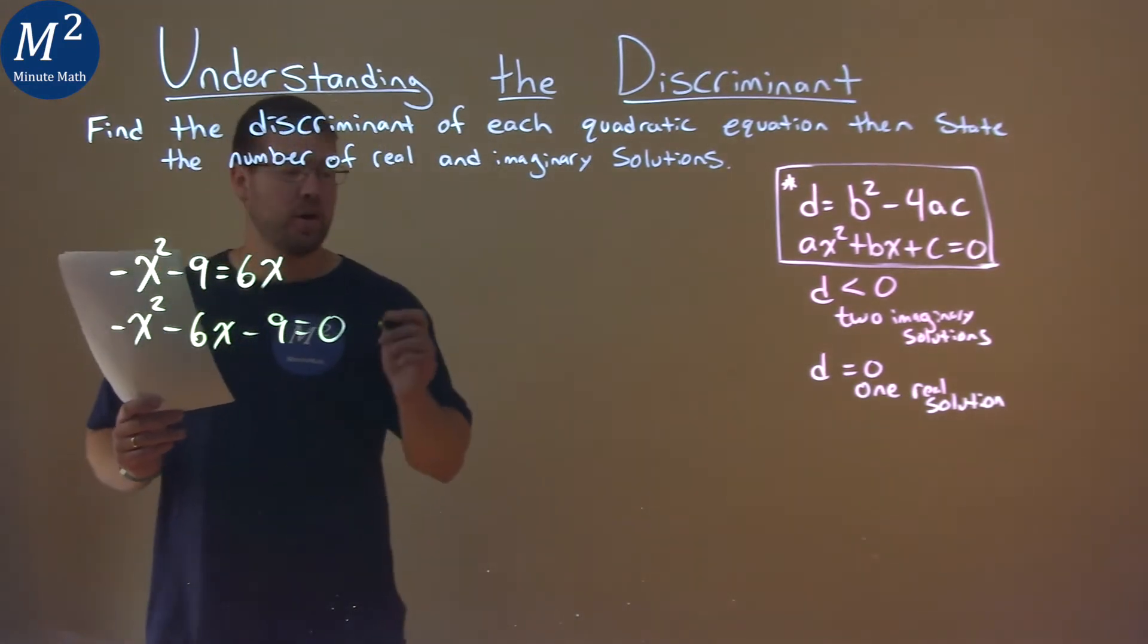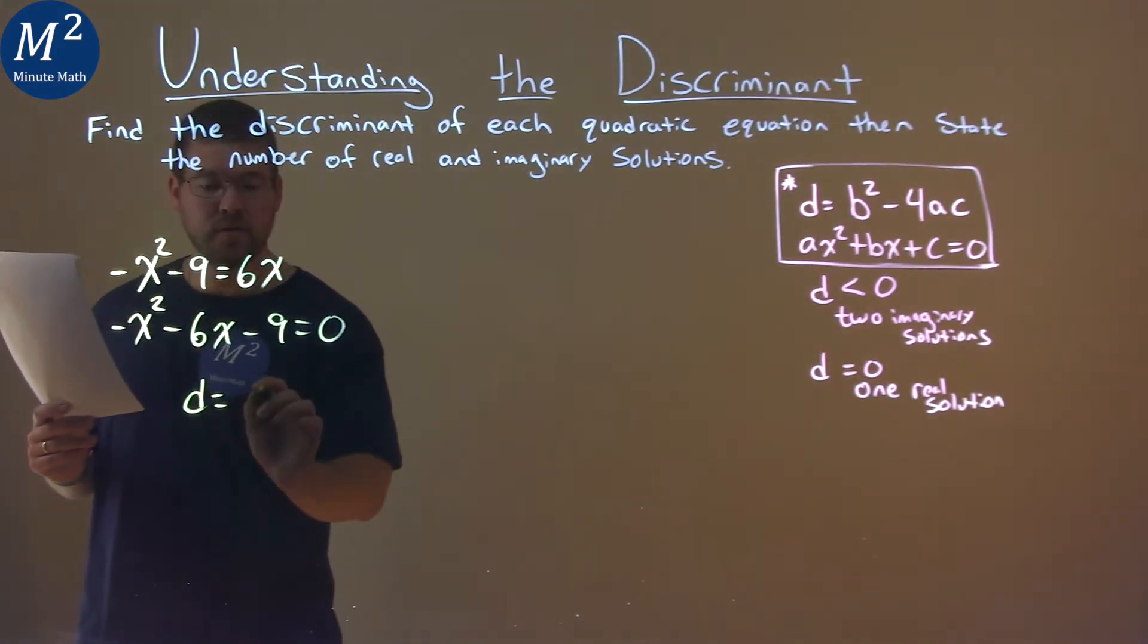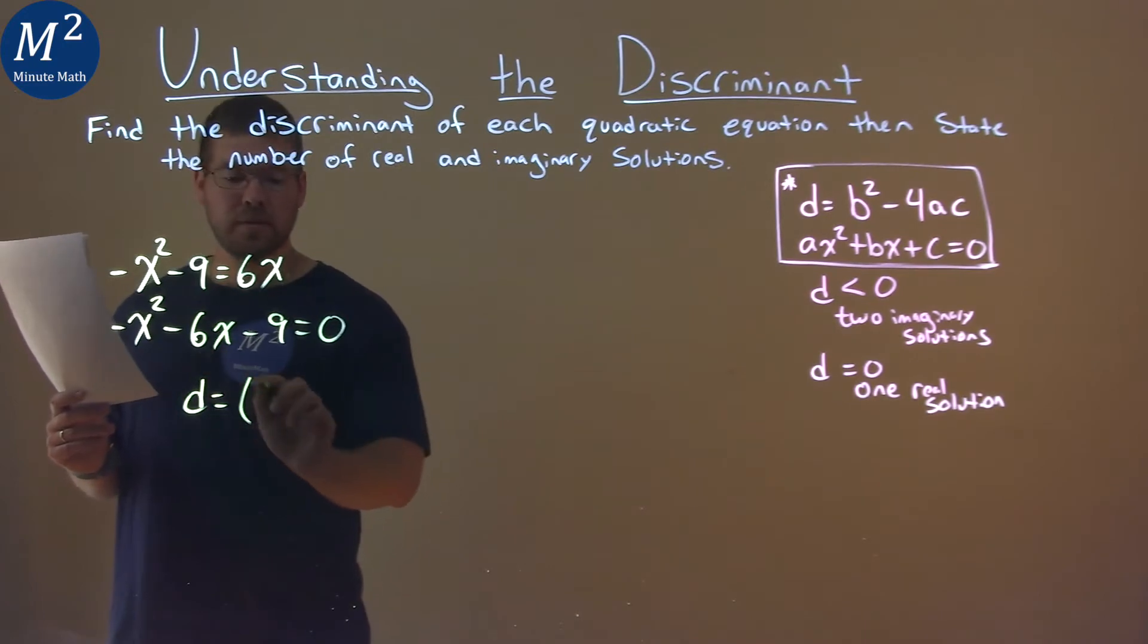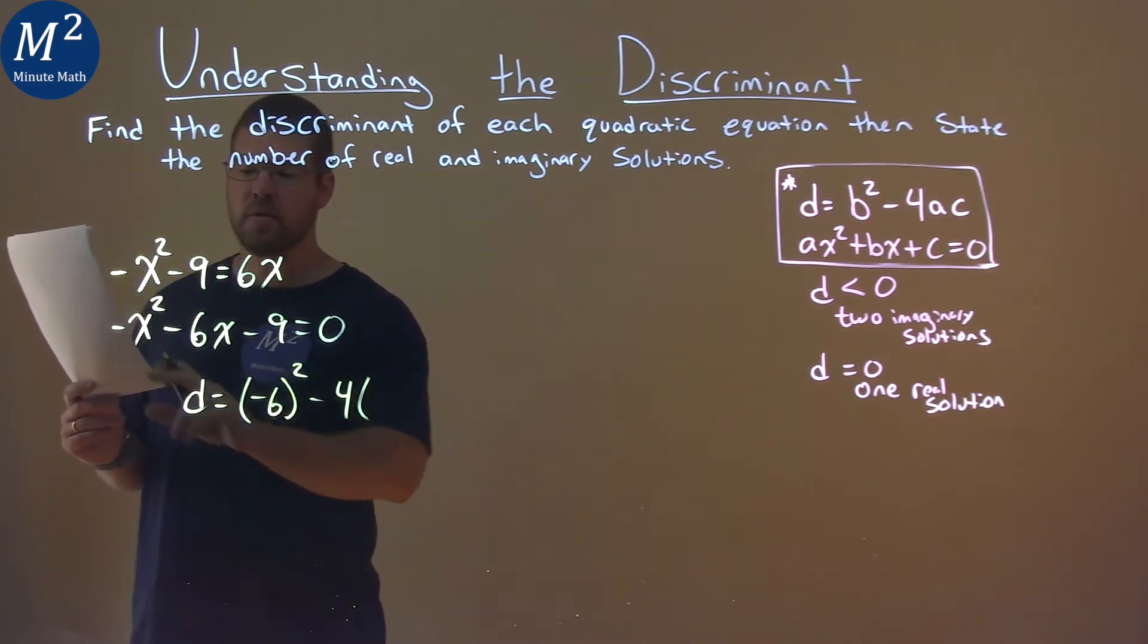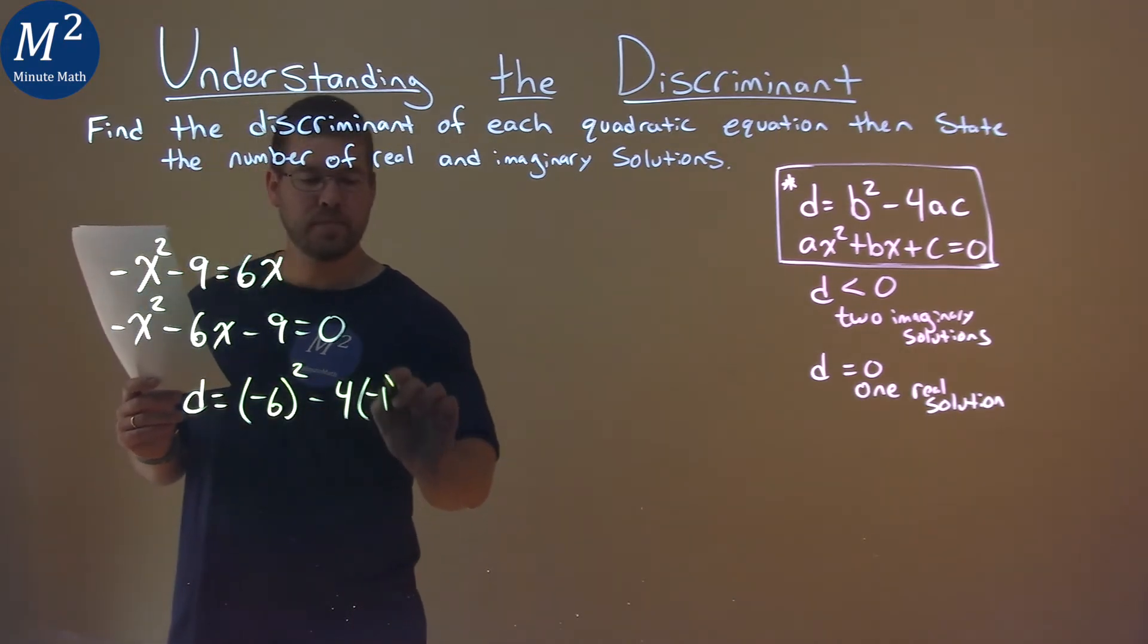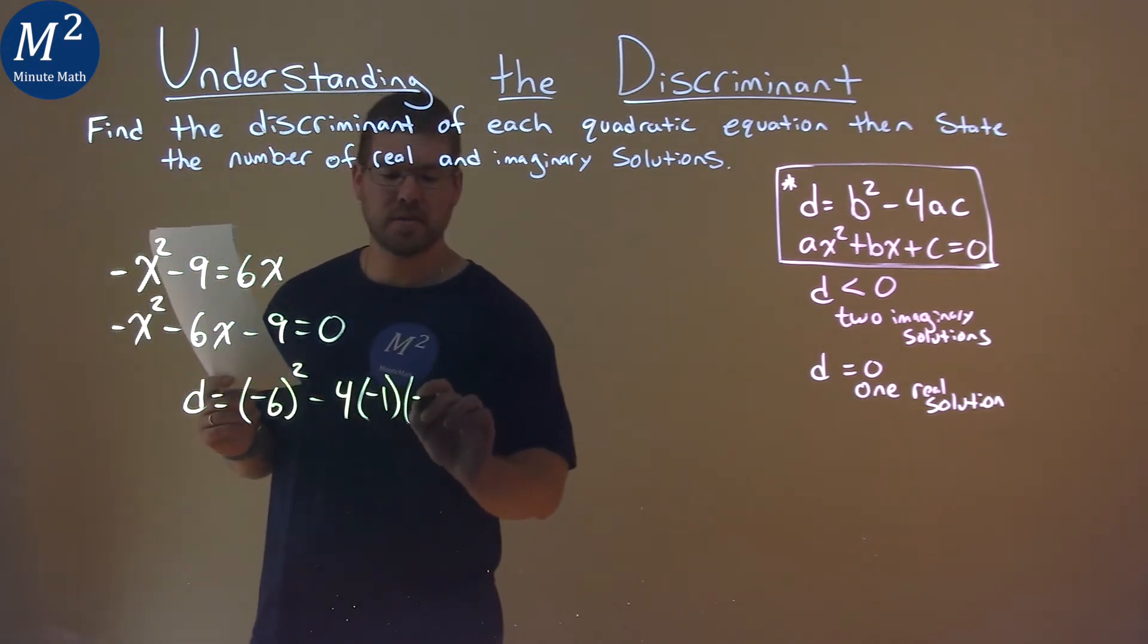We now use our formula. Our discriminant here is equal to our b value, negative 6 squared, minus 4 times our a value, negative 1, times our c value, which is negative 9.